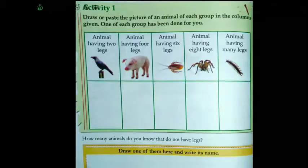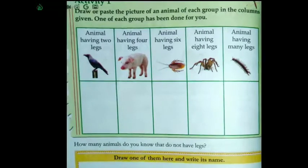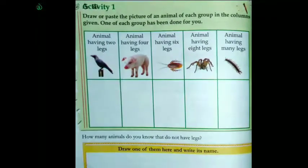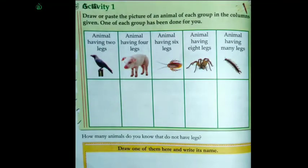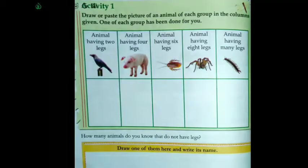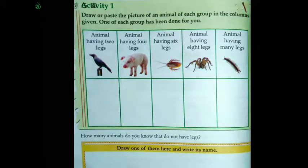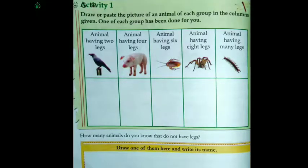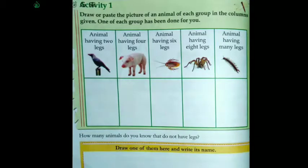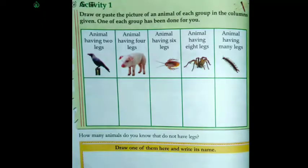Students, ab aapko ek activity di rakhhi hai — draw or paste the picture of an animal of each group in the columns given. One of each group has been done for you. Yaani ki aapko ya to picture draw karni hai ya paste karni hai animals ki jo each group mein aapko di rakhhi hai. First group hai aapka: animal having two legs, jinke do legs hote hai.